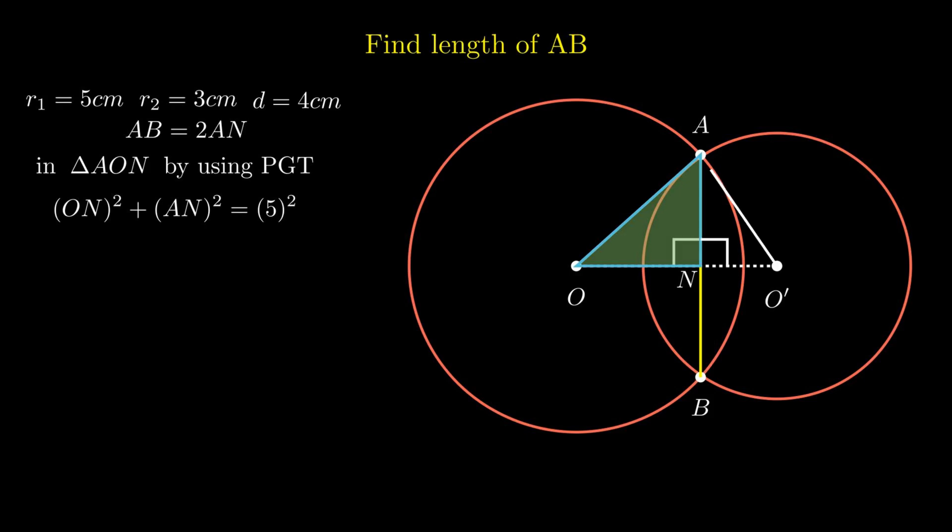consider right angle triangle AO'N. By using PGT again, O'N square plus AN square equals 3 square.